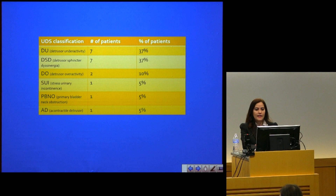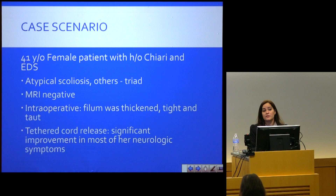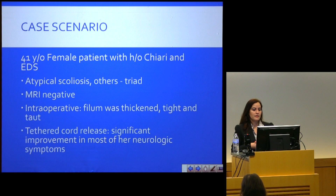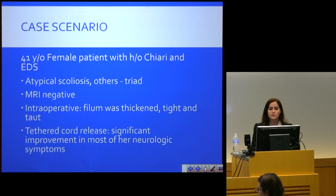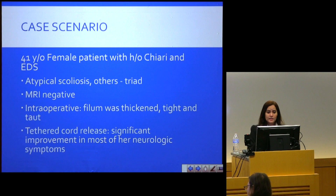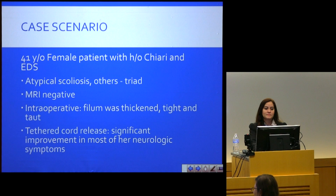Along those lines, I want to present a case scenario — one of the first patients for whom we repeated urodynamics before and after tethered cord release surgery. She is 41 years old with a history of Chiari malformation and EDS. She presented with the classical symptom triad and had a negative MRI for classical tethered cord findings. Intraoperatively, the filum was thickened, tight, and taut. She underwent cord release.